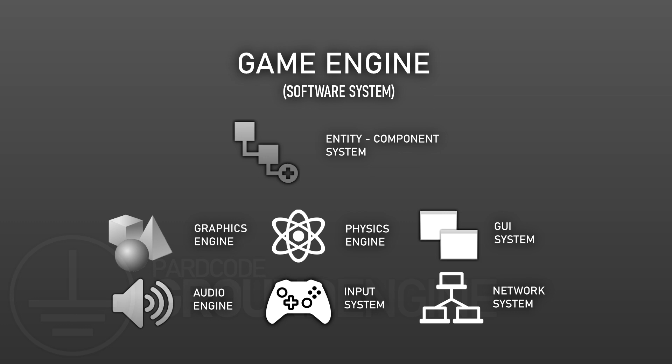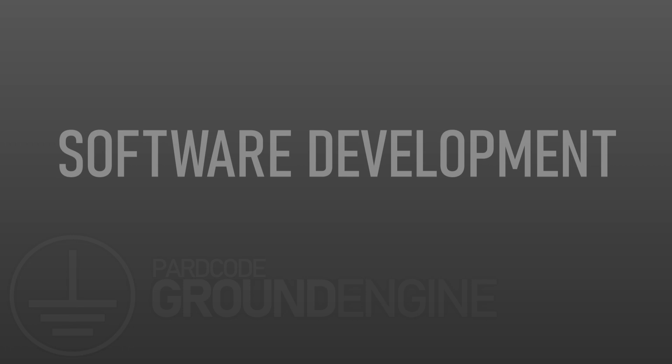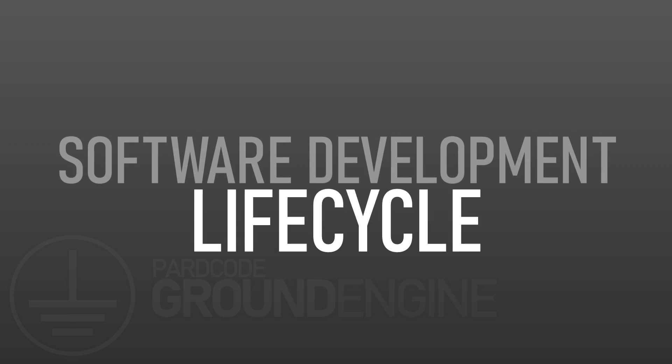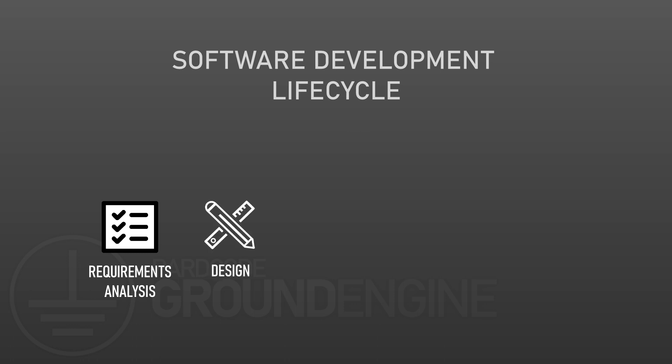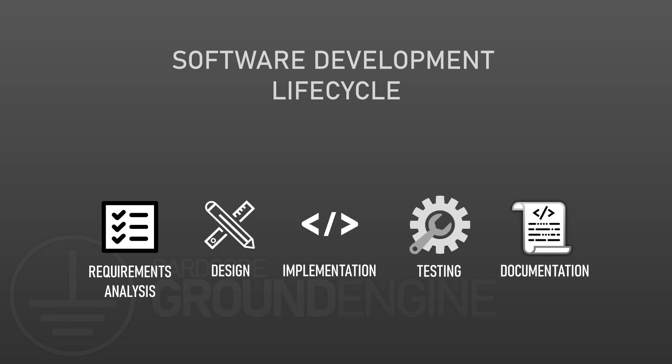In order to face the development of a game engine, we have to care about the so-called software development life cycle. In software engineering, the software development life cycle is a process composed mainly by the following stages: requirement analysis, design, implementation, testing, and documentation. For this series, we will focus mainly on the requirements, design and implementation parts, but let's take a look at each stage.